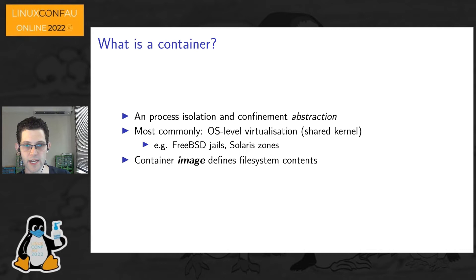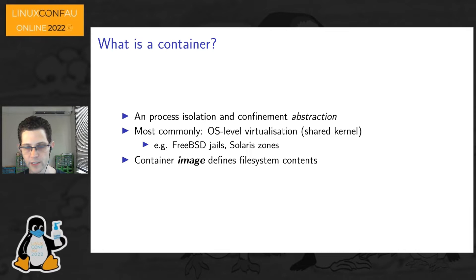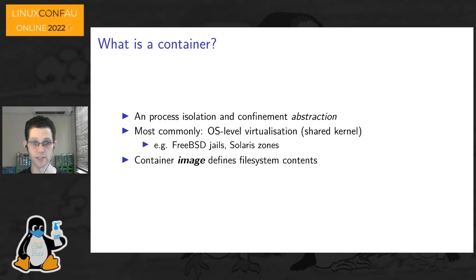Non-Linux implementations of OS-level virtualization include BSD jails and Solaris zones. It's important to distinguish the container — the confinement mechanisms and the processes running in that environment — from container images. If you're talking about Dockerfiles and building a container, you're really talking about building a container image, which defines the filesystem contents intended for use in a container as well as metadata about how that container should be run, such as what process needs to run and environment variable settings.